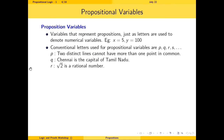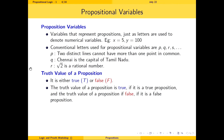Variables used to represent propositions are called propositional variables — just as letters denote numerical values. The conventional letters used are p, q, r, s, and so on. For example: p represents 'Two distinct lines cannot have more than one point in common,' q represents 'Chennai is the capital of Tamil Nadu,' and r represents 'Root 2 is a rational number.'